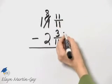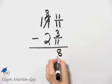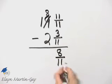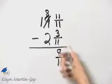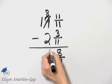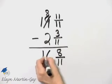That's 11 minus 3 which is 8 over that common denominator of 11. And then 18 minus 2 is 16 and then bring down the 11.